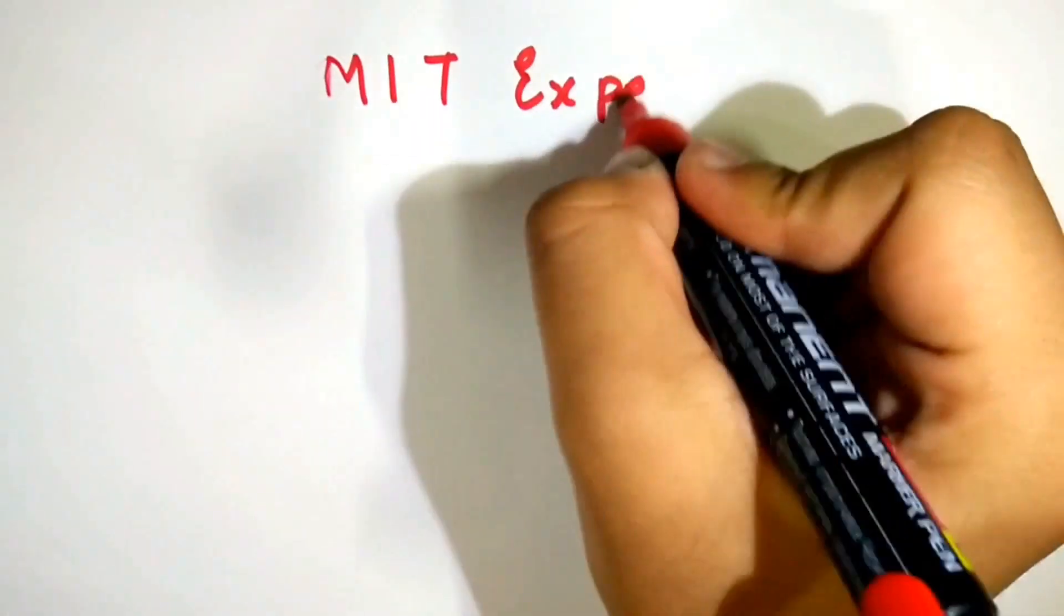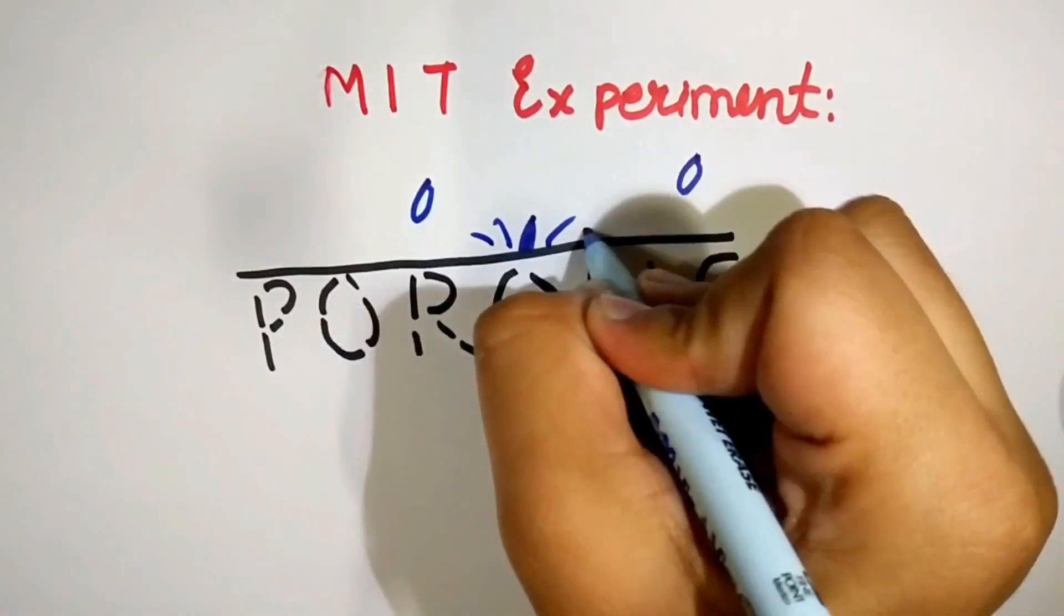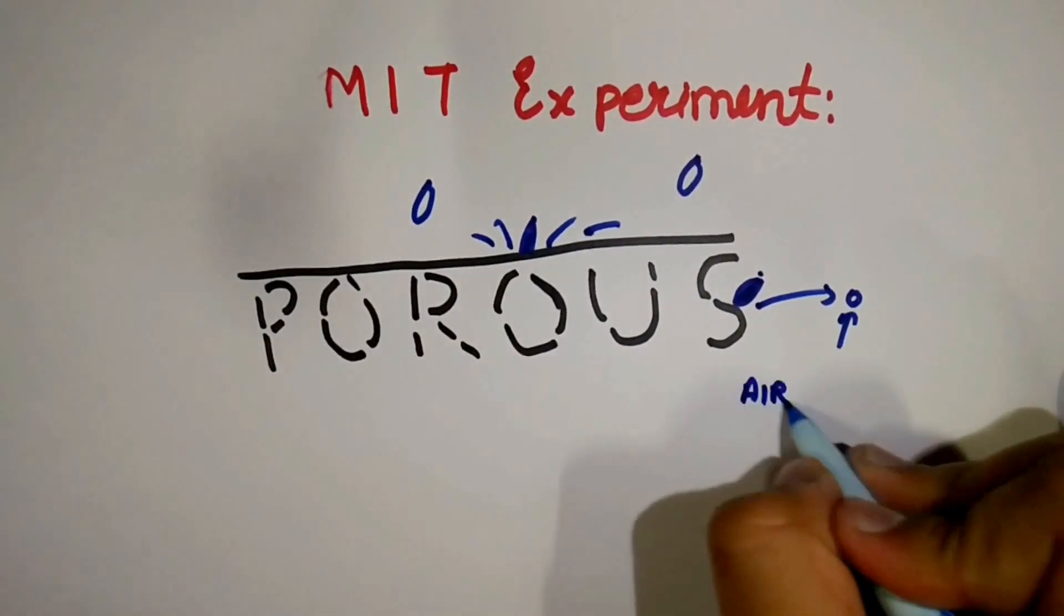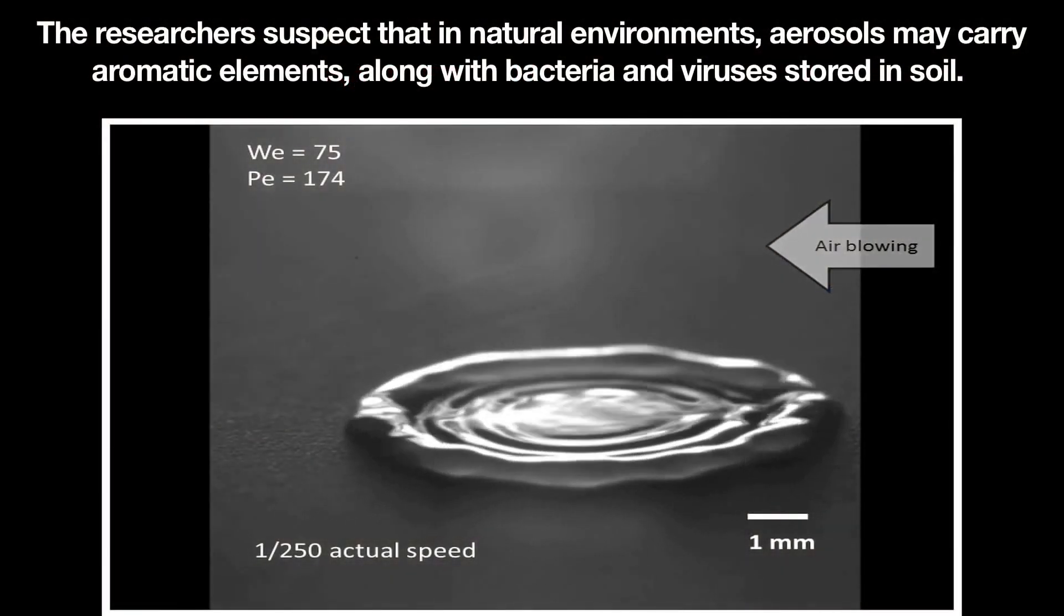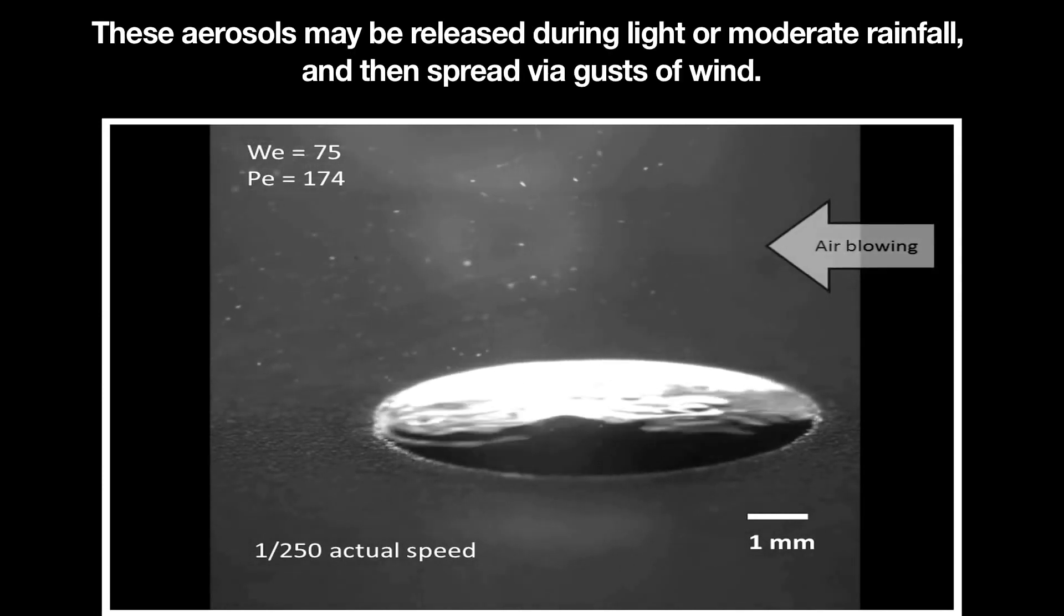The smell of rain was a mystery for quite a while. Thankfully, researchers from MIT did an experiment in which they discovered that when a raindrop hits a porous surface, it traps small air bubbles at the point of contact. These air bubbles are then released as aerosols.